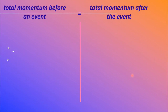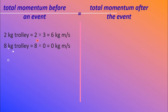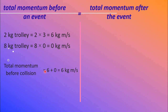Let's look at how to do this calculation. Total momentum before equals total momentum after. Using P = mv, the momentum of the blue trolley before collision is 2 kg × 3 m/s = 6 kg·m/s. The momentum of the red trolley is 8 kg × 0 = 0. Therefore, total momentum before the collision is 6 kg·m/s.